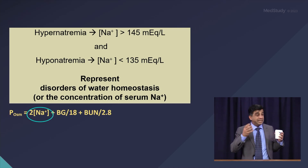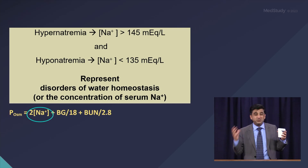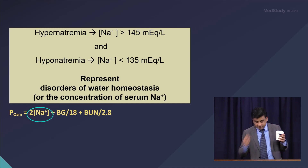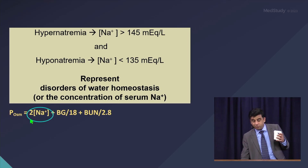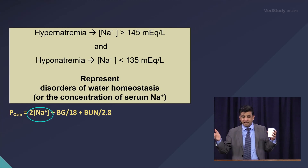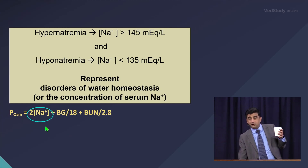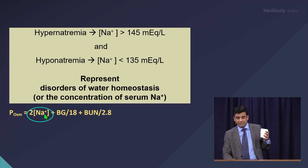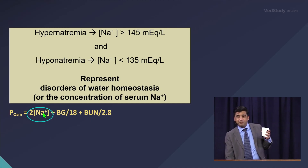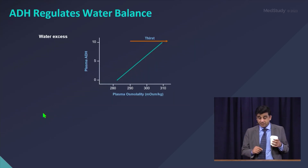Your plasma osmolality — normally 280 to 295 — is primarily dependent on the concentration of sodium. Of course, a little bit comes from glucose and a little bit from urea, but primarily it is dependent on sodium.